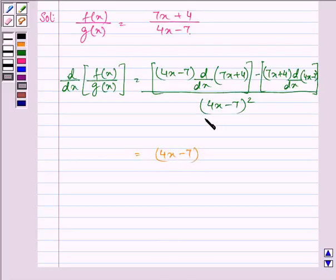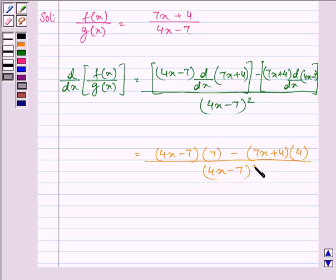4x minus 7, the derivative of 7x plus 4 will be 7, minus 7x plus 4, the derivative of 4x minus 7 is 4, divided by 4x minus 7 the whole square.